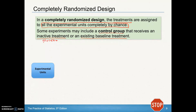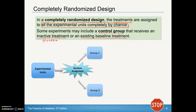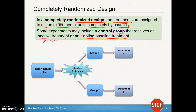So a good experimental design will take the experimental units, randomly assign them to at least two different groups. Group one will get one treatment and group two will get the other treatment, and then we compare those results. This is a simple comparative design that employs a completely randomized design.